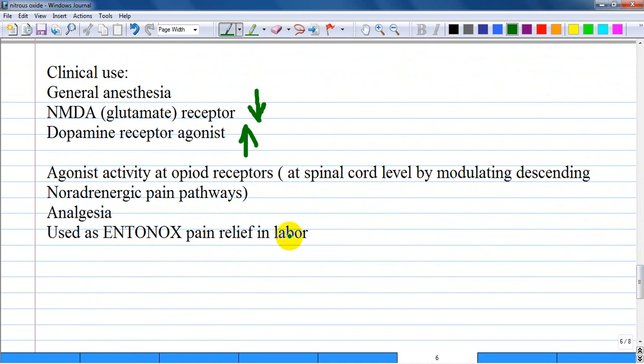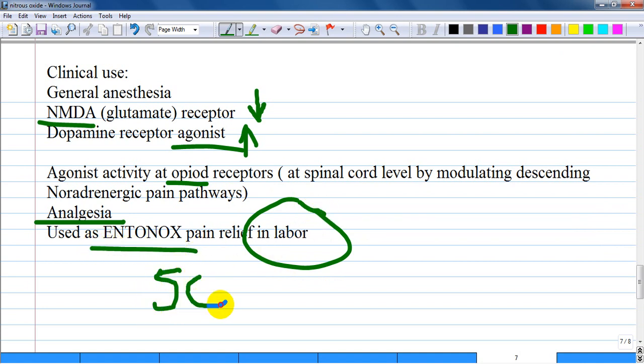Clinically, nitrous oxide is used in general anesthesia through mechanisms affecting NMDA (glutamate) receptors, decreasing their activity while increasing dopamine receptor activity as an agonist. It produces good analgesia with agonist activity at opioid receptors, especially at spinal cord level by modulating descending noradrenergic pain pathways. It's used in labor as Entonox, which is 50% oxygen and 50% nitrous oxide.